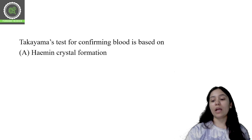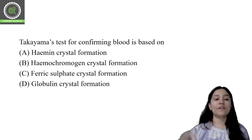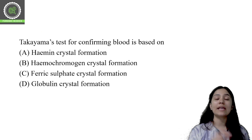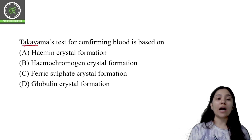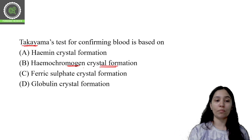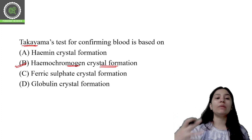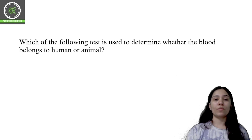Next question: the Takayama test for confirming blood is based on — hemin crystal formation, heme chromogen crystal formation, ferric sulfate crystal formation, or globulin crystal formation. There are two major microcrystal assays as confirmatory tests for blood analysis: Takayama and Teichmann. The Takayama test is based on heme chromogen crystal formation. The Teichmann test, by contrast, is based on hemin crystal formation. Remember: Takayama gives heme chromogen crystal confirmation under the microscope.